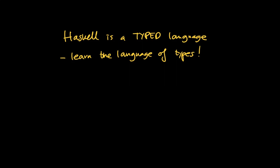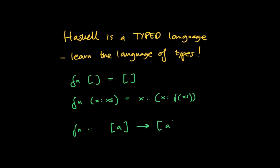It's important, for instance, that when you're writing a function such as this one, the type of fn is not list-to-list, oops, you can't say that. What is the type of fn? It's a function from a-list to a-list. That's what the Haskell system will tell you. So, please learn the language of types.